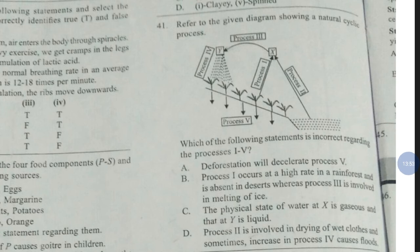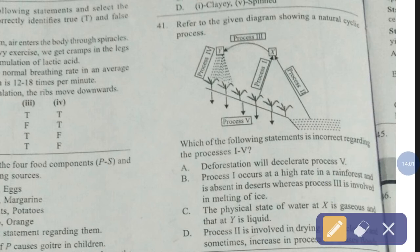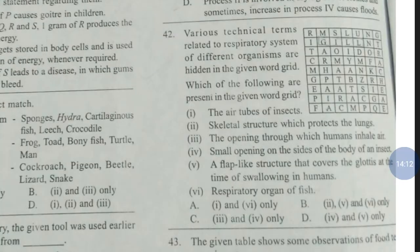Question number 41. Refer to the given diagram showing a natural cyclic process. Which of the following statements is incorrect regarding the processes first to fifth? The correct answer is option number B — process first occurs at a high rate in a rainforest and is absent in deserts, whereas process third is involved in melting of ice.